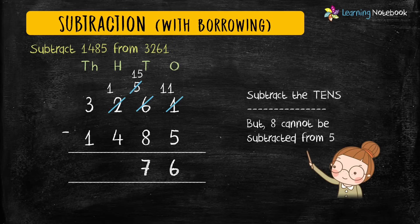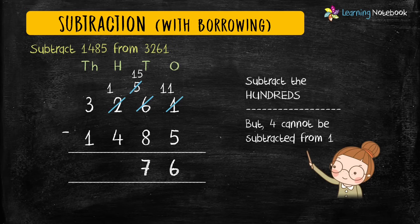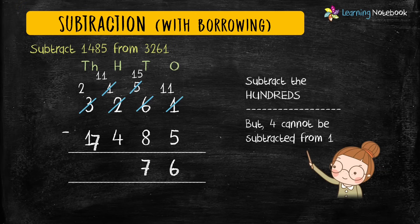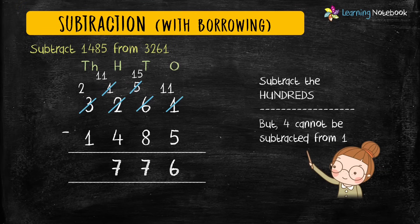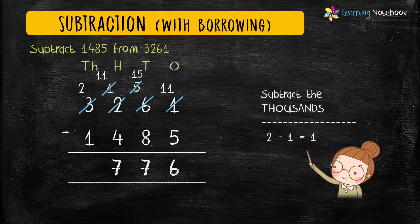Now let's subtract the digits at hundreds place: 11 minus 4 equals 7. In the end, let's subtract the digits at thousands place: 2 minus 1 equals 1.